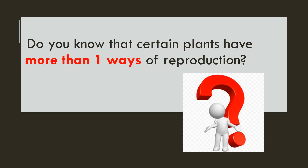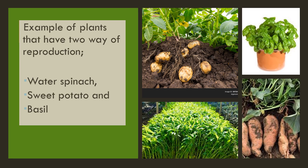Do you know that certain plants have more than one way of reproduction? Let's think — what plant is that? Look at this slide. There are a few examples of plants that have two ways of reproduction. They are water spinach, sweet potato, and also basil.